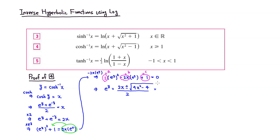Cleaning it up: we have 2x plus or minus the square root. We can pull the factor of 4 out from under the radical, so square root of 4 is 2, leaving square root of x squared minus 1. Dividing through by 2, the 2s cancel, giving us x plus or minus square root of x squared minus 1.